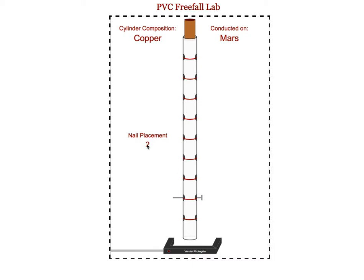Students can place the nail by clicking here, and it will randomly move it to one of the holes on the PVC pipe. They can set where they want this experiment conducted and what they want the cylinder to be made of. The cylinders will be 5 centimeters in height, and each of these lines is 5 centimeters from the other. The PVC pipe should be lined up almost exactly with the photo gate, so that the photo gate catches the cylinder right as it emerges from the bottom of the PVC pipe.